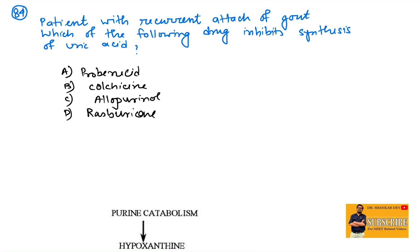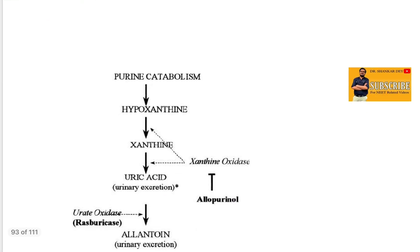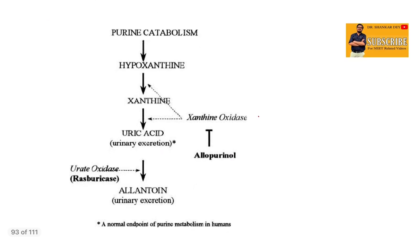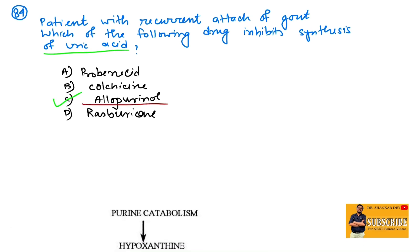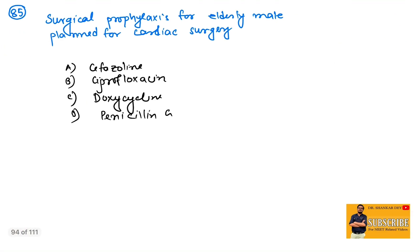Question number 84: patient with recurrent attacks of gout, which of the following drug inhibits synthesis of uric acid? As all of you know, uric acid synthesis—the enzyme that helps is xanthine oxidase. So xanthine oxidase inhibitor will decrease the uric acid synthesis, like allopurinol. So the answer will be allopurinol, which will decrease the uric acid synthesis.